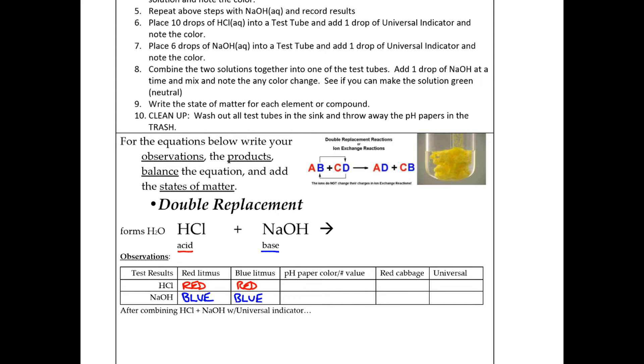So you should have also filled in your universal indicator colors, your red cabbage indicator colors, your pH paper color, and actual value of the pH.